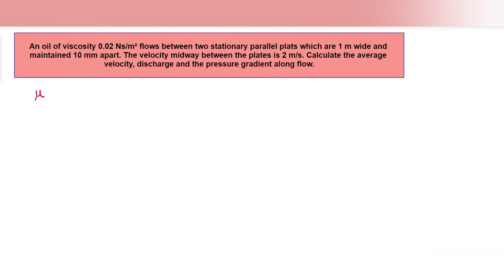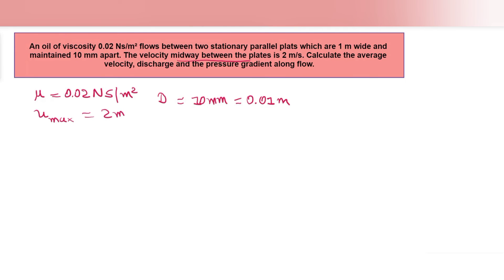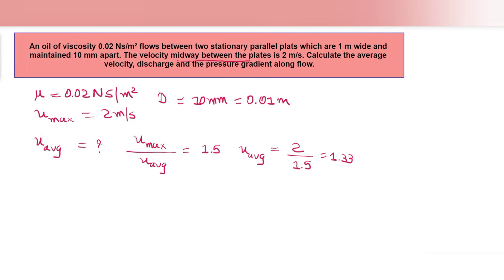The fifth question: an oil of viscosity mu = 0.02 N·s/m² flows between two stationary parallel plates that are 1 meter wide and 10 mm apart, so d = 0.01 m, width = 1 m. The velocity midway between the plates (maximum velocity) is u_max = 2 m/s. We calculate u_average using u_max / u_average = 1.5 for parallel plates, giving u_average = 2 / 1.5 = 1.33 m/s.